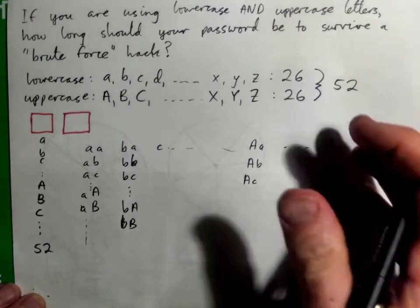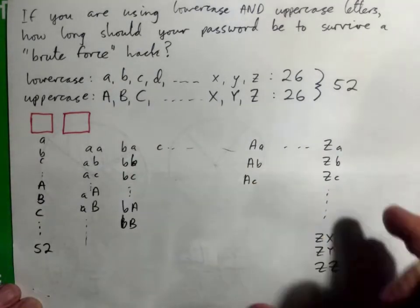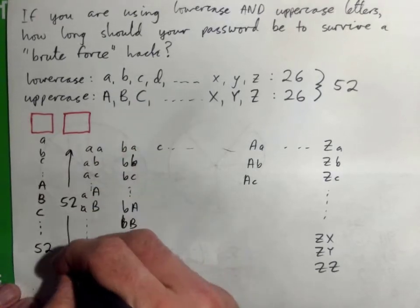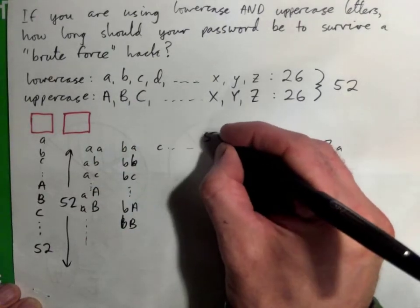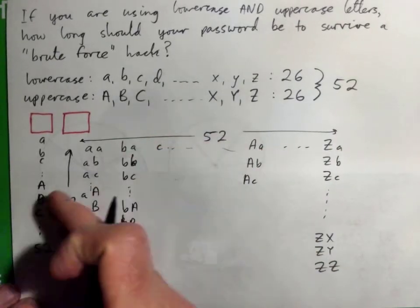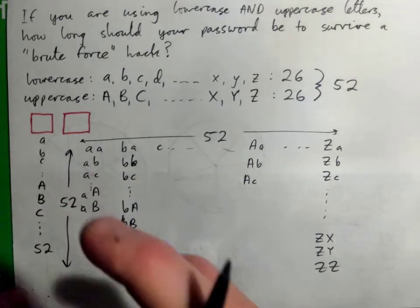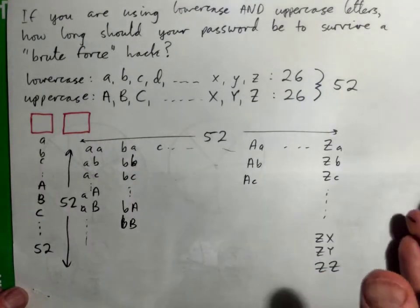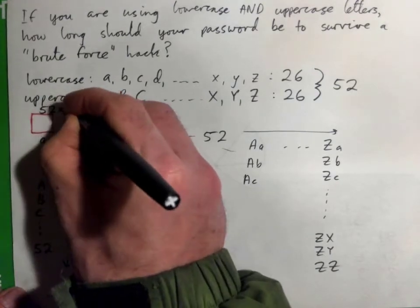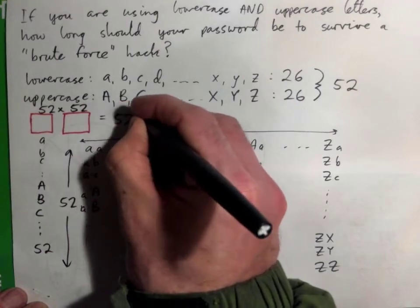So there are a lot, right? And in fact, if you wrote them all out, you would have 52 up and down and 52 across. So it would be kind of like 52 rows and 52 columns. So if it was just two letters long, your password, the amount of combinations possible would be 52 times 52, or 52 squared.